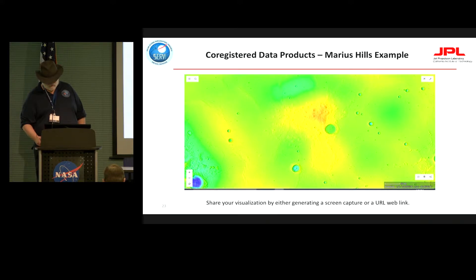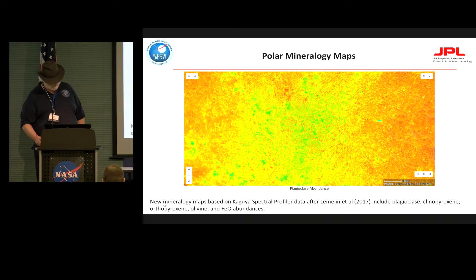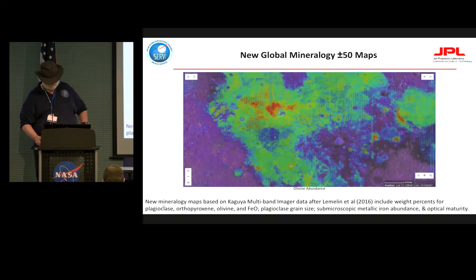This is very easily shareable by means of just generating a URL. Since it's all web-based, once you've produced your visualization, copy the URL, put it in an email, and anyone can load it in their browser and bring up the exact visualization you've created. New data products include polar mineralogy maps from Miriam Lemelin, and her team includes plagioclase, clinopyroxene, orthopyroxene, olivine, and iron oxide abundances.